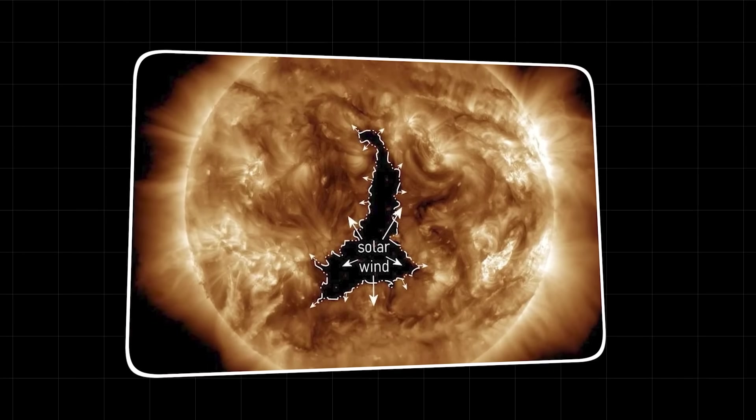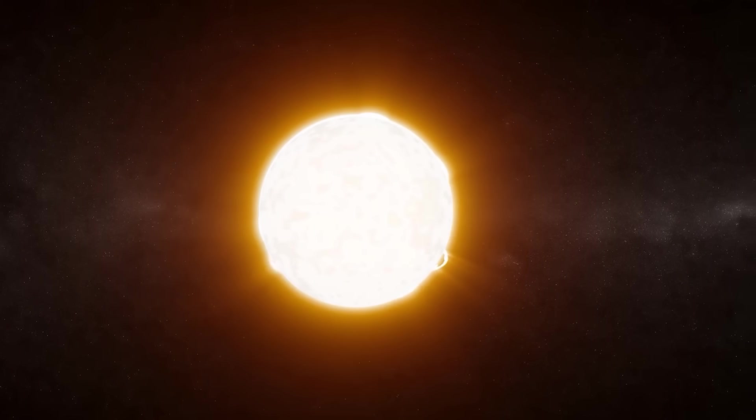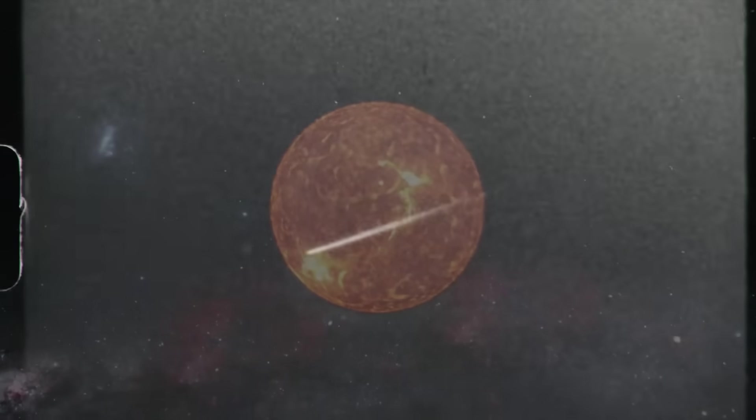This area, once vibrant with solar activity, quieted, becoming a cold, dark patch compared to its blazing surroundings. The sheer audacity of a comet seemingly affecting the Sun in such a dramatic fashion is what sent shockwaves through the scientific community.